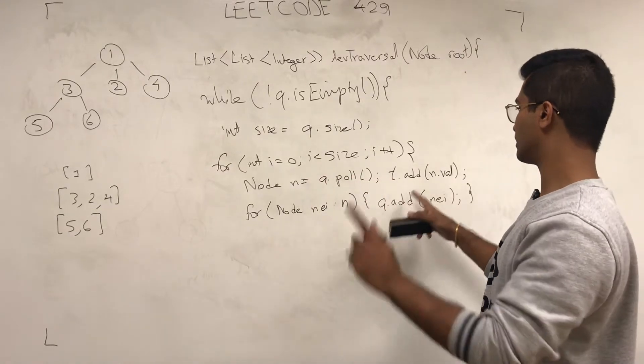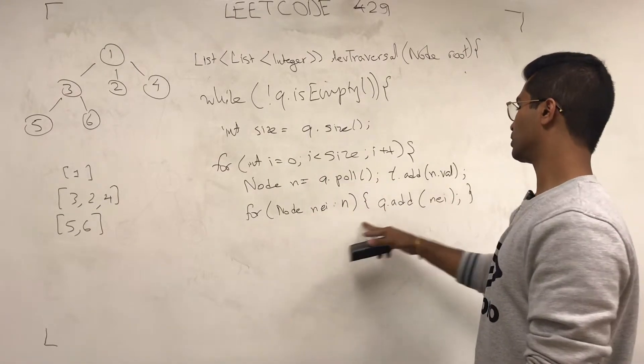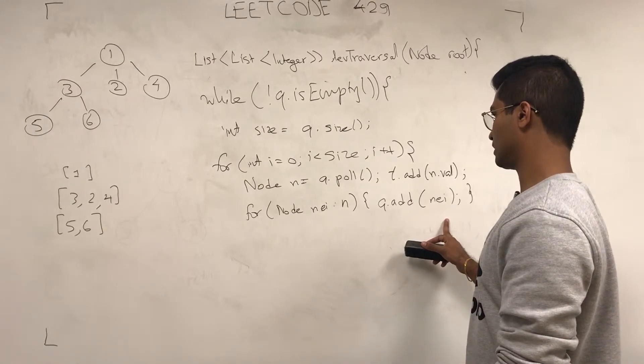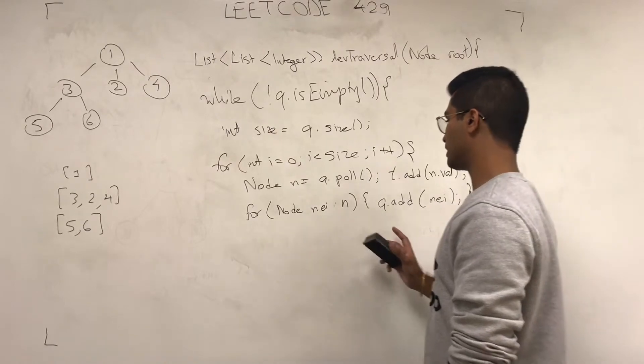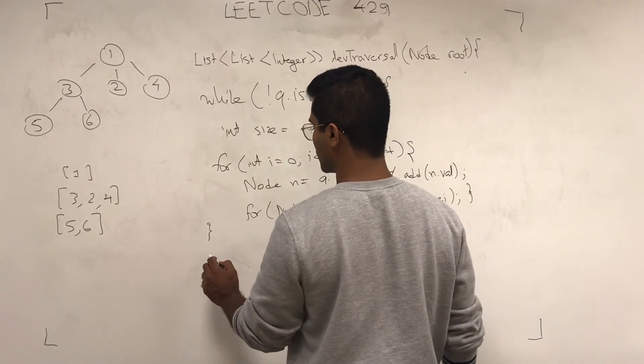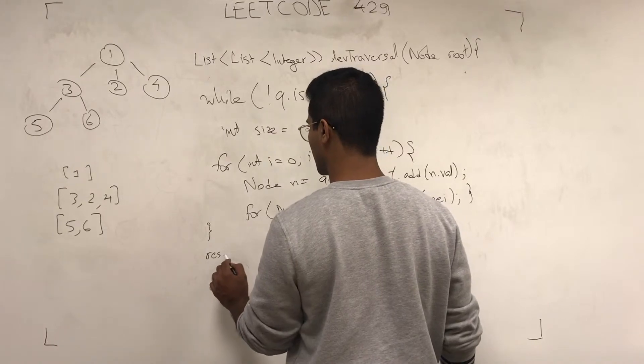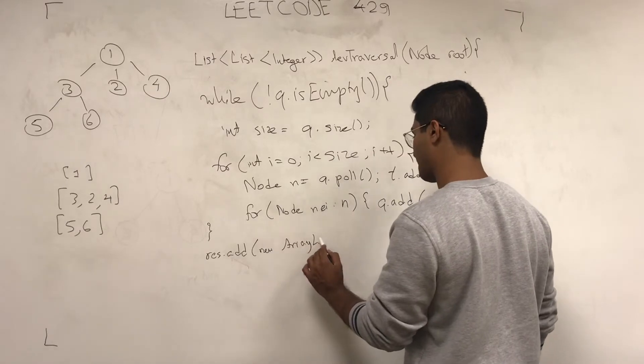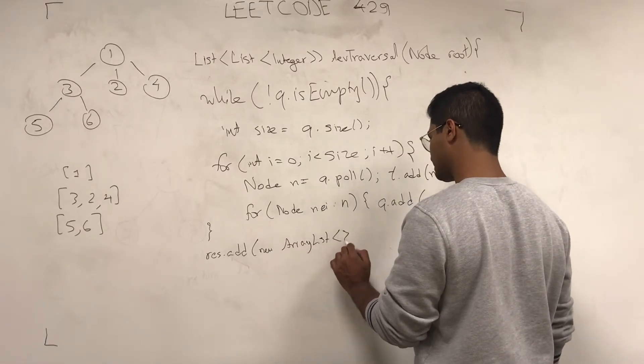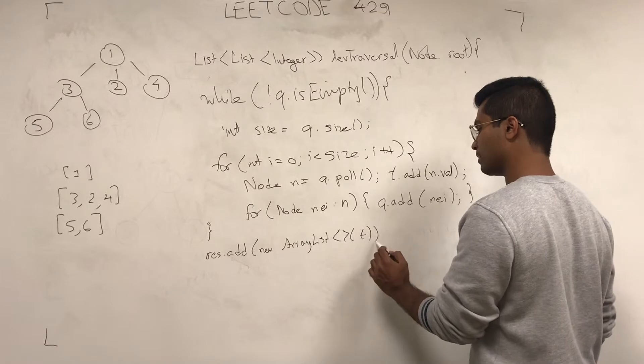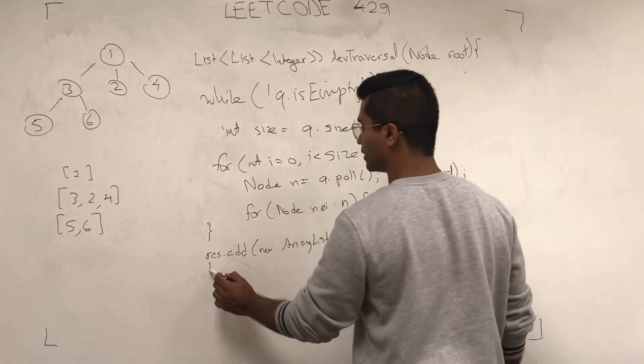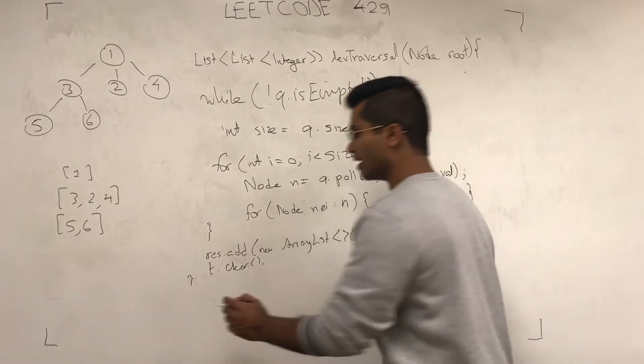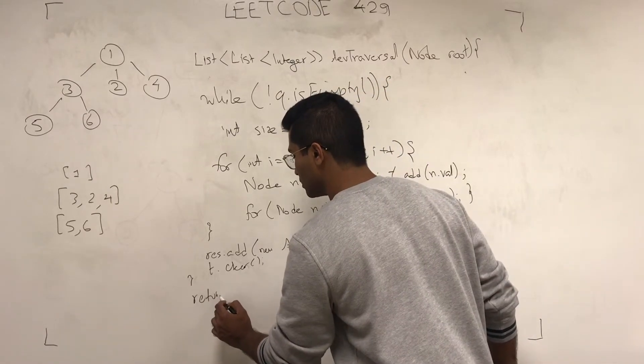So, we pull it. We add that one's value. Then, we go through the children and get ready for the next one. Okay. Then, what we do is we add res.add(new ArrayList(t)). And then, we clear t. Because we're going to reuse the temporary list again. And that's pretty much all you have to do to return res.